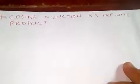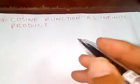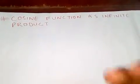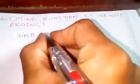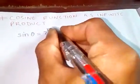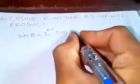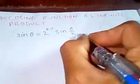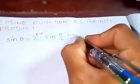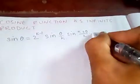Thanks for watching my video. Today I'm going to derive the cosine function as an infinite product. In my last video, I showed that sine theta is equal to 2 to the k minus 1 times sine theta over k, times sine pi plus theta over k, and so on.